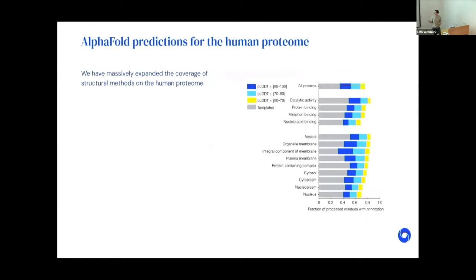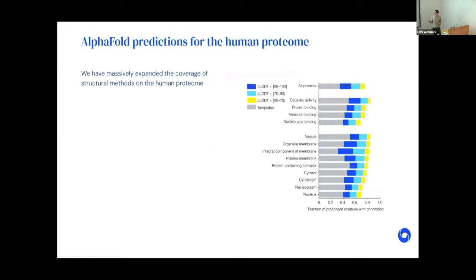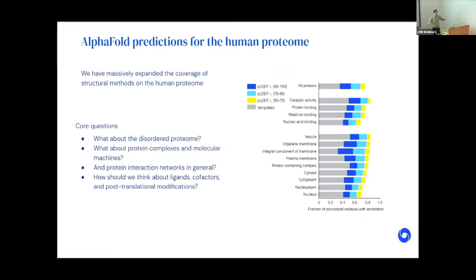We've made a lot of predictions. This shows our increase in coverage for the human proteome relative to both experimental structures and good template modeling — we still add a lot of coverage, including in membrane proteins and other classes. But this brings an important question: what should we think about everything else — disorder, complexes and interactions, interaction networks, ligands, cofactors, nucleic acids, PTMs? How dare we predict the whole proteome without any context? But that's the only choice you have at scale.